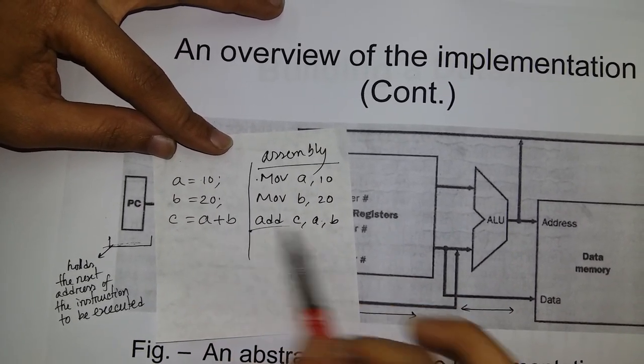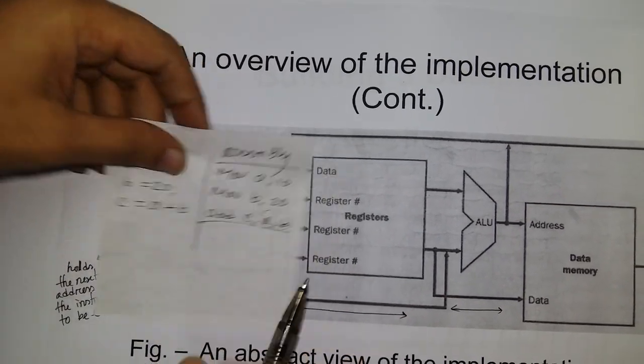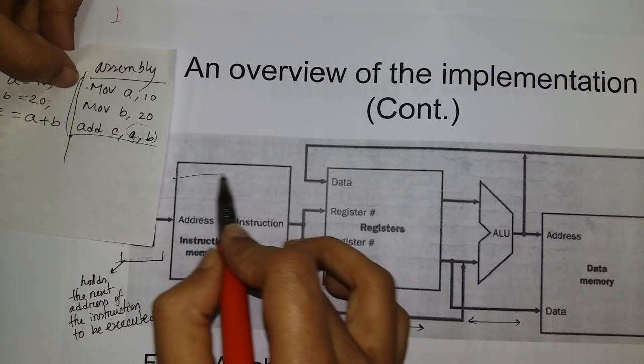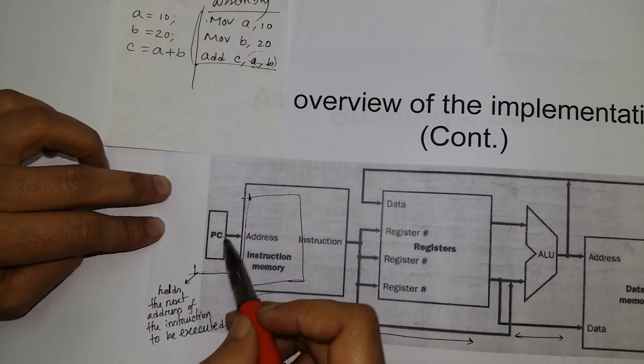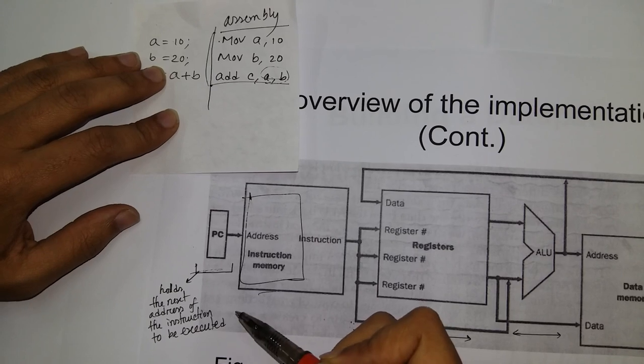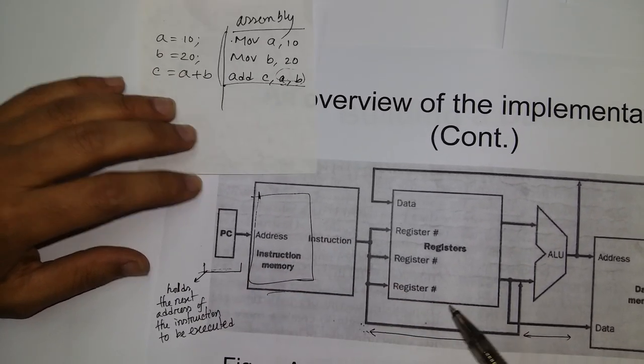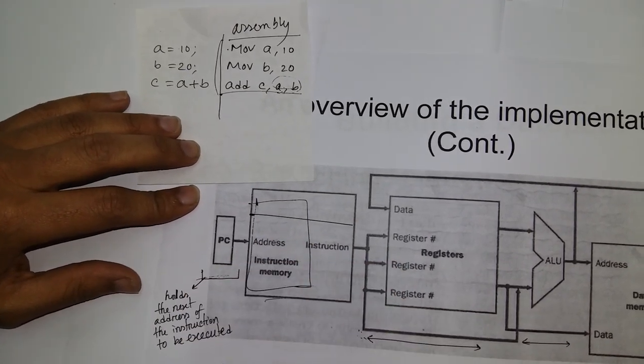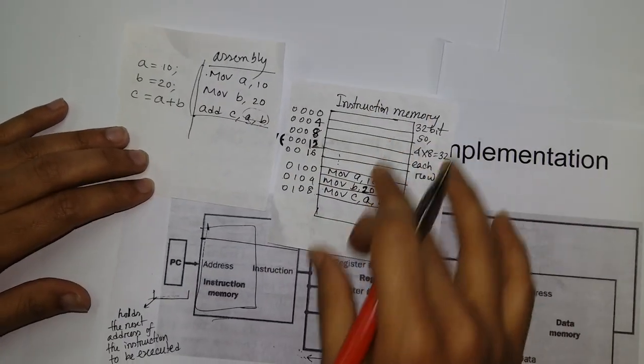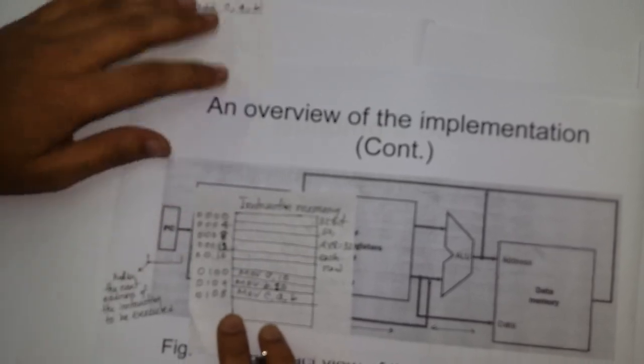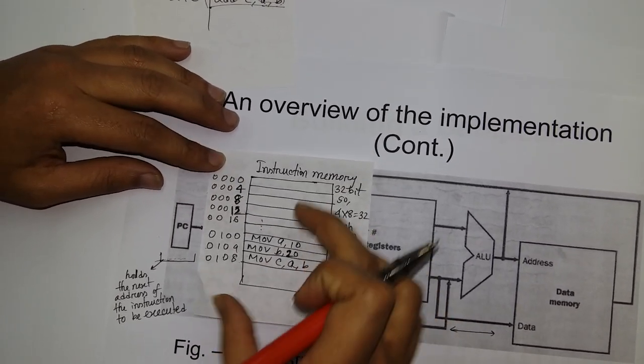These instructions are stored in the instruction memory as assembly code. The program counter's job is to fetch the next instruction. Fetching is the function of the program counter.